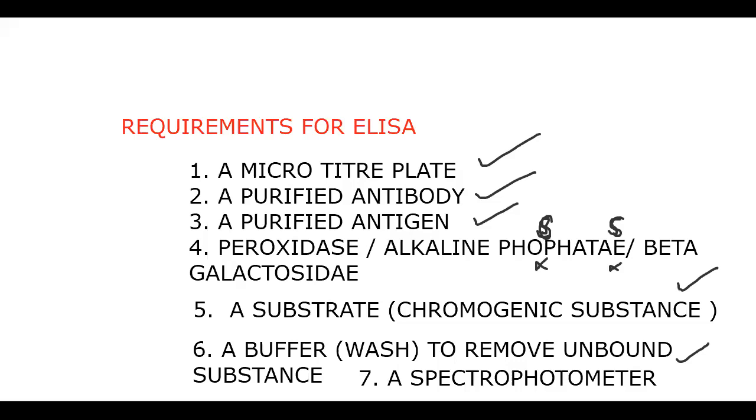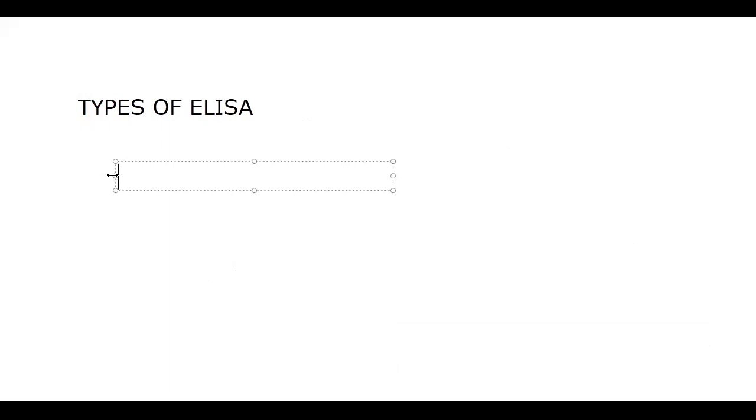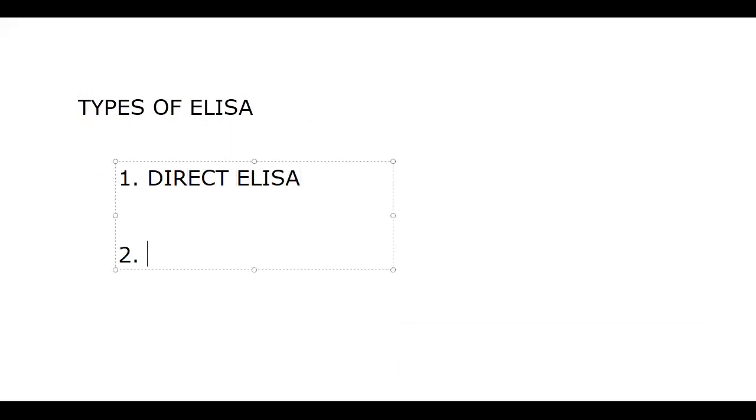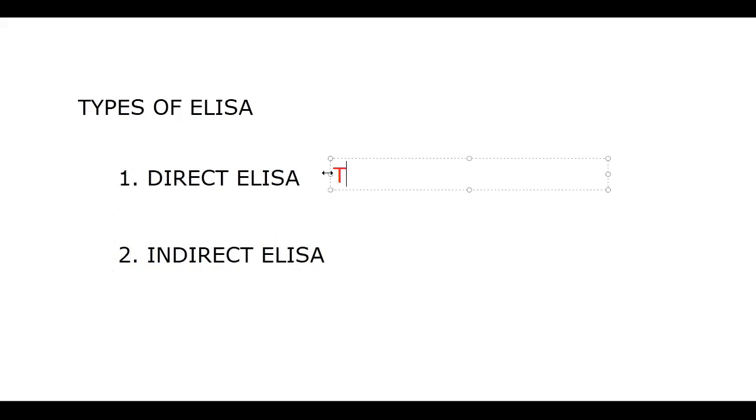Now let us look at the types of ELISA. There are two types: number one, direct ELISA; and number two, indirect ELISA. In direct ELISA, we are detecting antigens — so in the laboratory we carry purified antibodies.